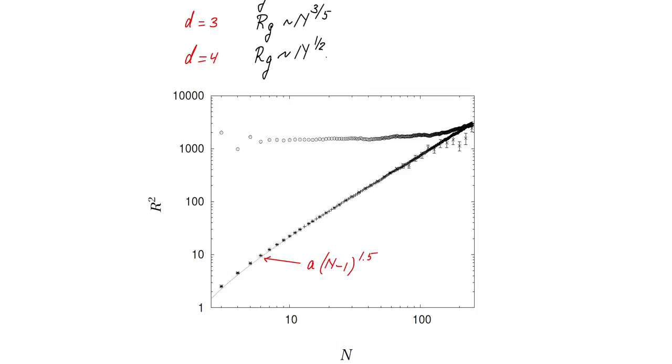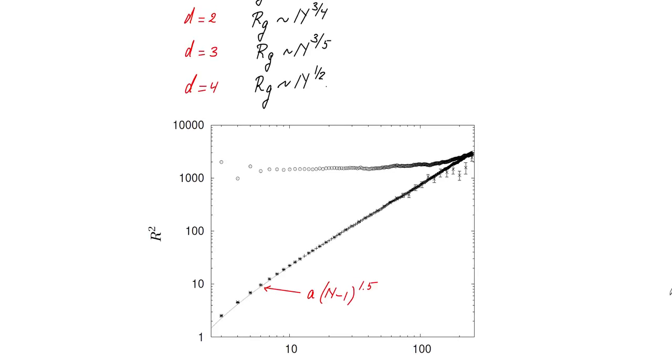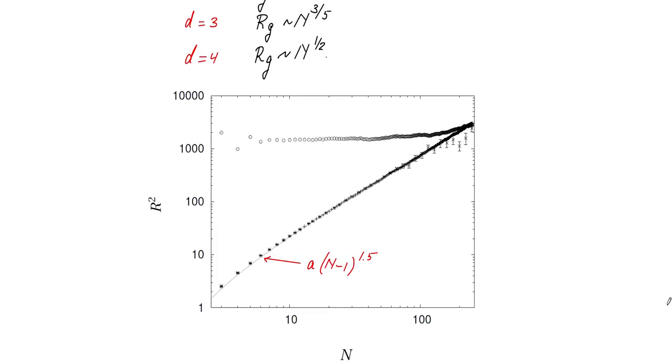Here you see the result of a computer simulation of polymers in two dimensions. These stars are the points which matter. They show you the radius of gyration squared versus the number of beads. The dotted line represents the theoretical result, which corrected for the length gives you (n-1) to the power one point five. We had found for the Flory theory that Rg indeed scales like n to the power three halves. So Rg squared gives us here the correct exponent.